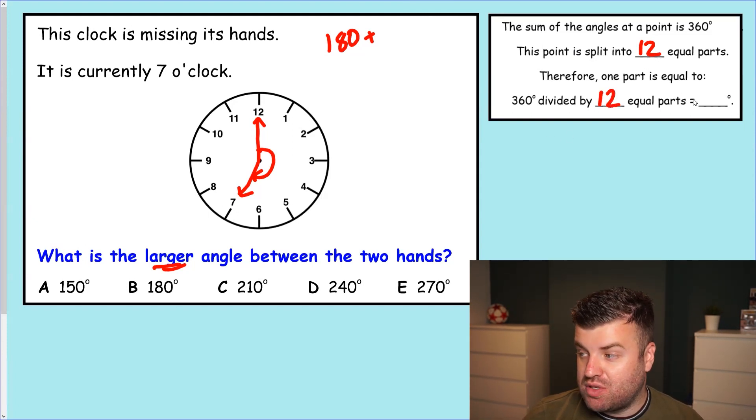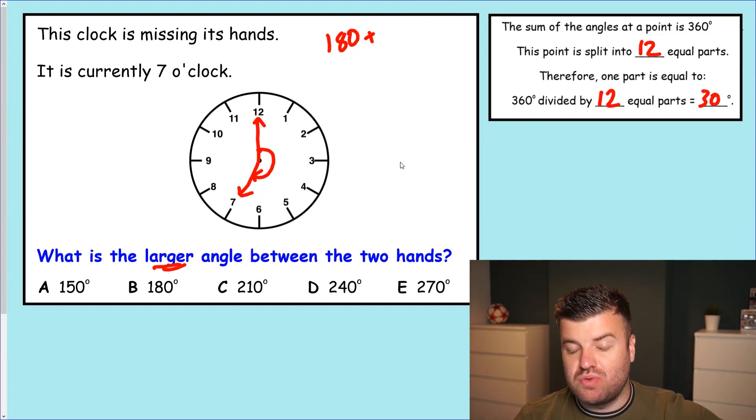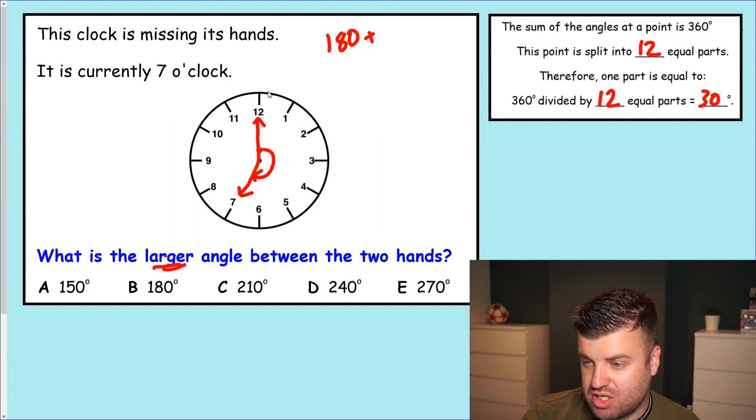Therefore, 360 divided by 12, you may remember, is 30 degrees. Now we've got that unit measurement for one part of the turn. We can just use that now, count up the total number of parts, and then that's our answer. So we have 1, 2, 3, 4, 5, 6, 7 parts.